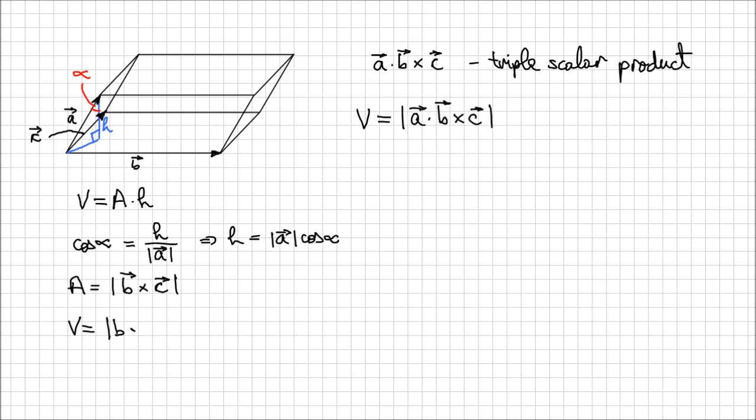So the volume, it's the area, the magnitude of the cross product between B and C, times the height, H, which is magnitude of a cosine of alpha. We can reorganize this just to make it look a little prettier. So I'm going to say magnitude of a times magnitude of B cross C times cosine of alpha. We can do that.